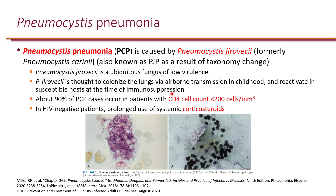Because this organism is ubiquitous, it is thought that we all get exposed to it during our childhood. In immunosuppressed patients, it basically gets reactivated. In HIV specifically, it can lead to infection of the lungs and pneumonia. 90% of PCP cases occur when the CD4 cell count is less than 200 — an important cutoff to remember.